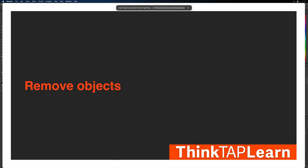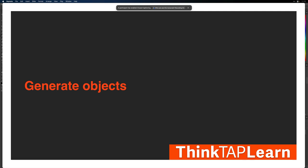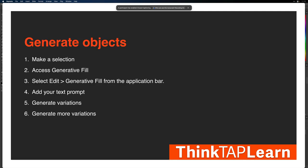We talked about removing objects — that's pretty straightforward. Select the objects and let generative AI get rid of them. Generally just leave the selection blank and hit Generate. Now let's talk about generating objects. You can make a selection, access Generative Fill, and type in a text prompt.